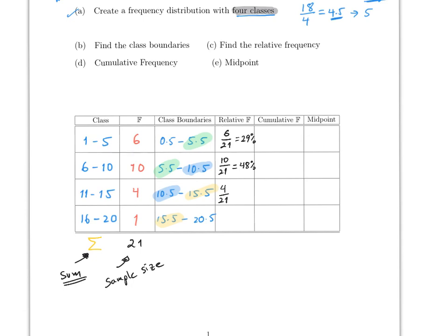Continuing — the third class is 4 over 21, which is about 19%, and the last is 1 over 21, which is about 4%. We divide everything by 21 because the sample size is 21. Make sure you round correctly, since rounding differences can push the total slightly over 100. The relative frequency is simply the frequency divided by the total for each class.